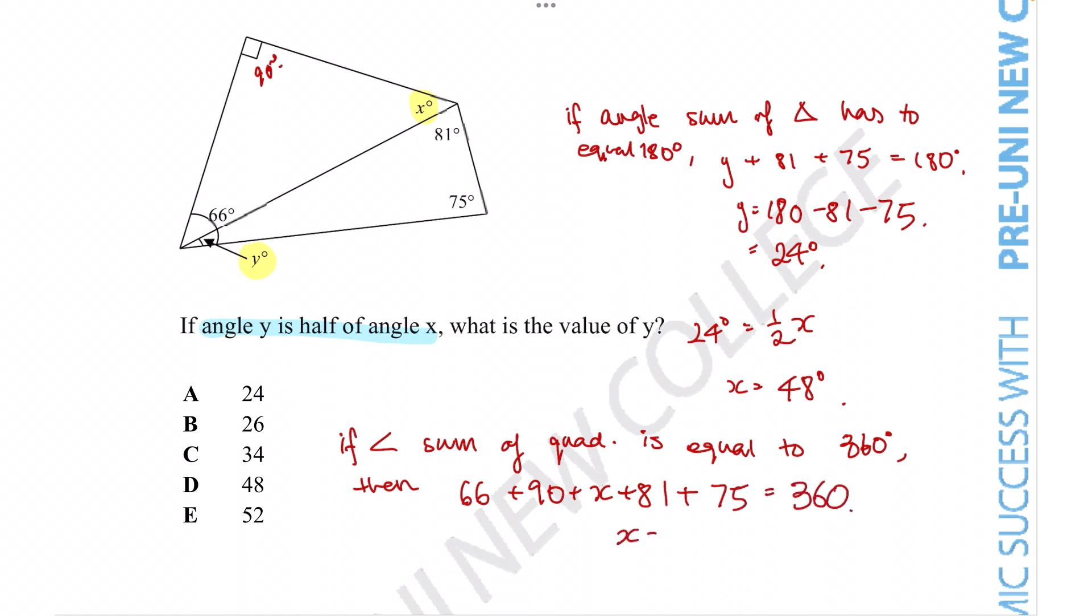So that allows us to find that x is equal to 48 degrees, then we can tell what y is, since y is half of angle x, and that gives us 24 degrees as well. So that would be the answer, again, 24 degrees.